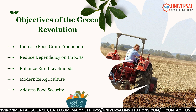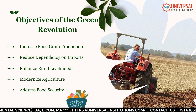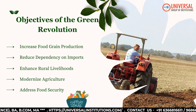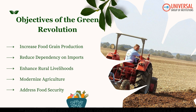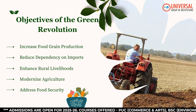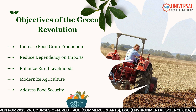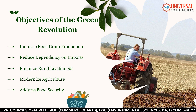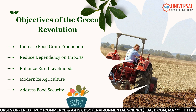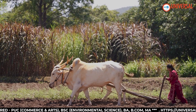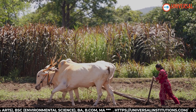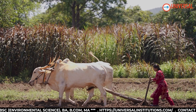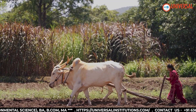This dependency was unsustainable and often came with political strings attached. The Green Revolution aimed to reduce reliance on imports by boosting domestic production, making India more self-sufficient. The third objective was to enhance rural livelihoods by improving farmers' incomes. With better seeds, fertilizers, and irrigation methods, farmers could achieve higher yields and earn more, improving their quality of life and contributing to the overall development of rural India.